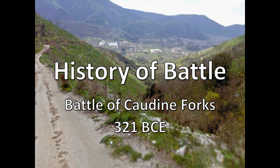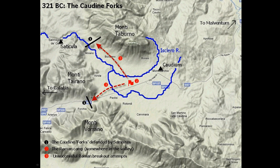The Battle of the Caudine Forks took place during the Second Samnite War, which occurred between 327 and 304 BCE. A Roman army led by consuls Spurius Prostumius and Titus Vetturius Calvanus was ambushed in a mountain pass in the Apennines. Samnite general Gavius Pontius blocked both ends of the pass with felled trees, while his men occupied the heights on each side, from where they rained down missiles. In a hopeless position, the Romans surrendered.